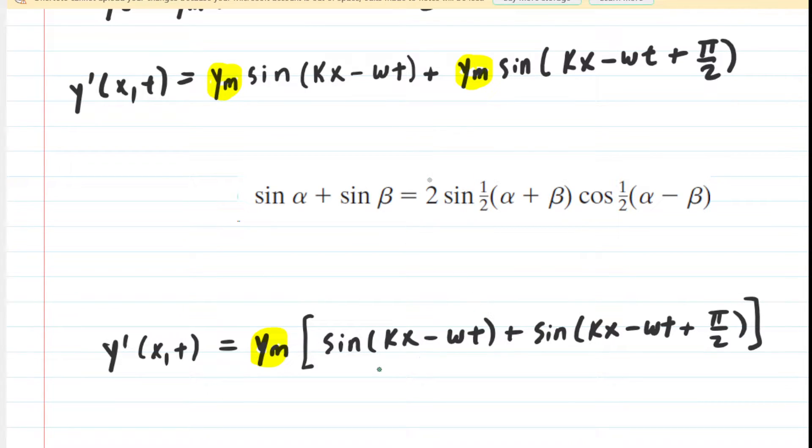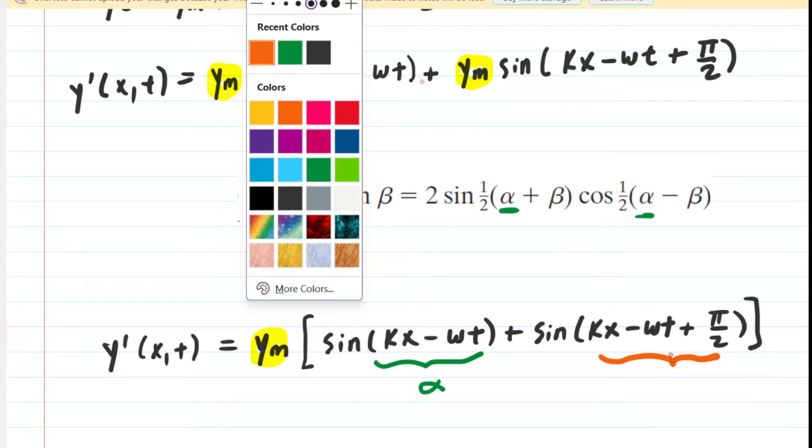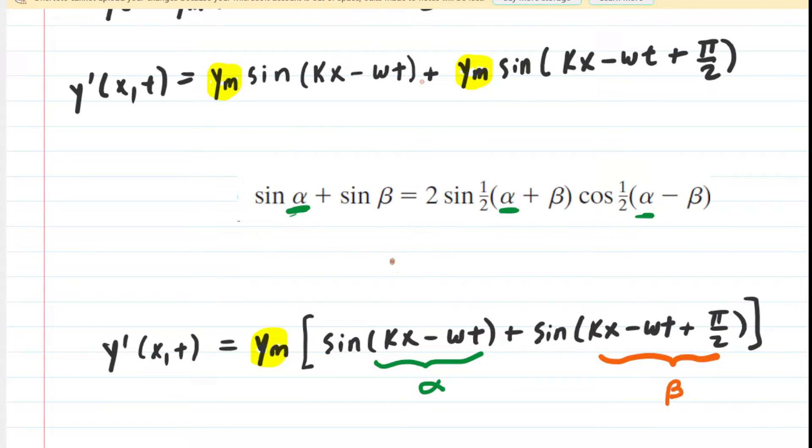We're going to be using this identity. In order to use this identity, this term right here would serve as our α. That's going to be α throughout this equation. And then the other term is going to serve as our β. We'll color them in two different colors so we can follow this along.